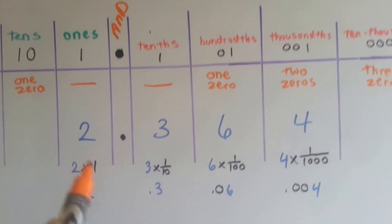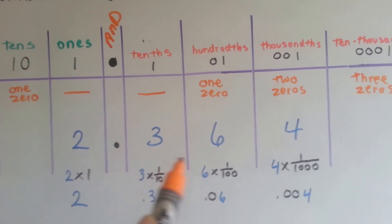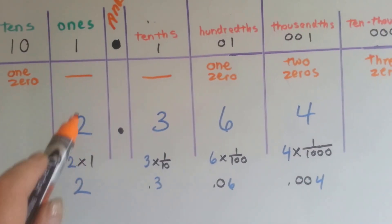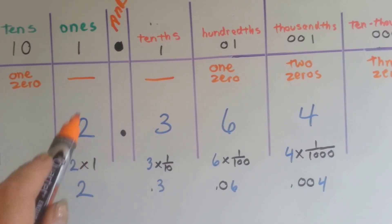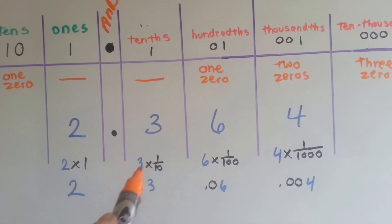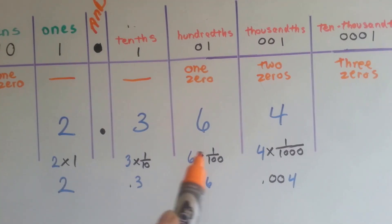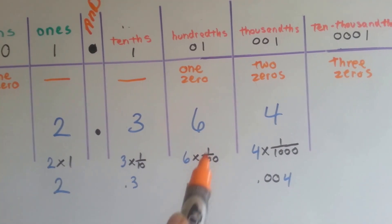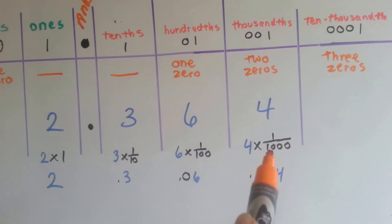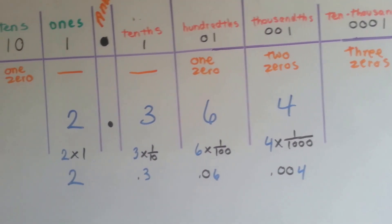We have two-and — the decimal point is always read as 'and' — 364 thousandths, because the four ended in the thousandths place. The two means two times one, it means two ones. The three tenths means three times one-tenth. The six stands for six hundredths, or six times one-hundredth. And the four stands for four times one-thousandth, and we end up with two and 364 thousandths.